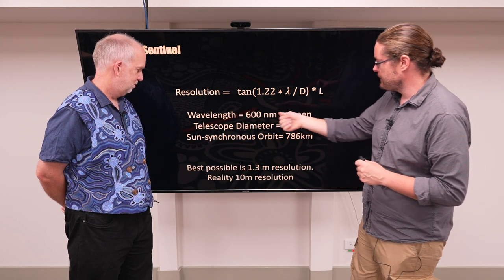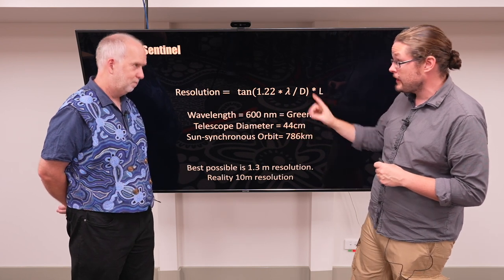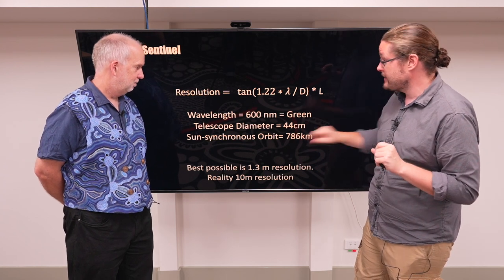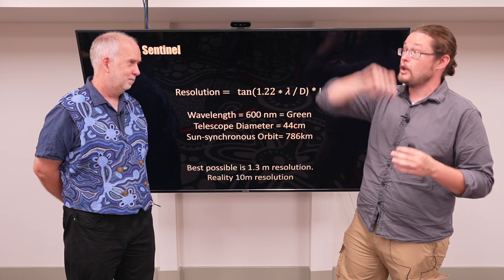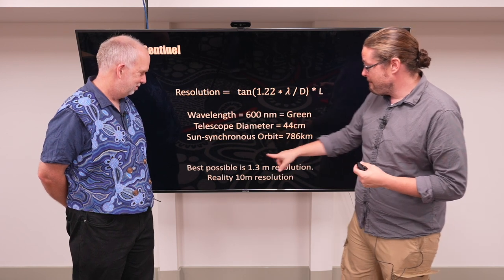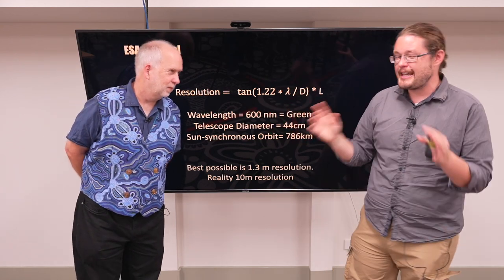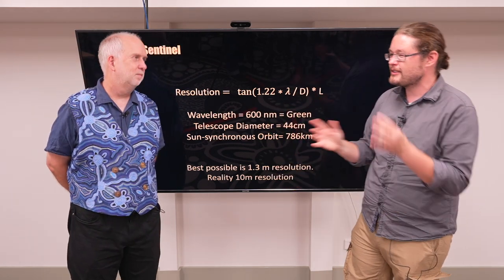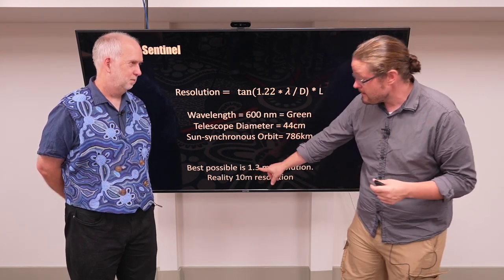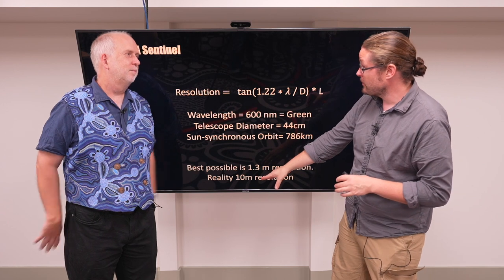You should be able to see it from space, for the most part. But if we go back to this equation, let's say we want to look at the greeny-orange color and we have a 44 centimeter telescope. This is the actual size of ESA's Sentinel satellite that does lots of Earth observations. It orbits at 786 kilometers, kind of always following the sun around, because there's no point looking at the Earth at night—you're not going to see anything. The best it could do is 1.3 meters, but there's other cameras, other wavelengths, some other subtleties of building it. It's a bit old, so really, the best it only does is 10 meters.